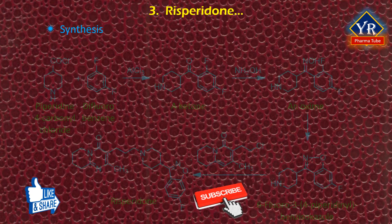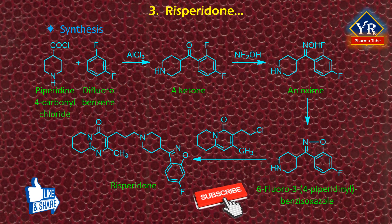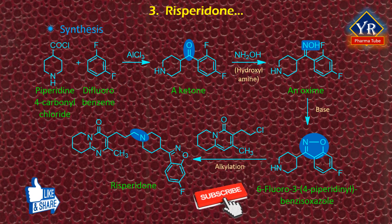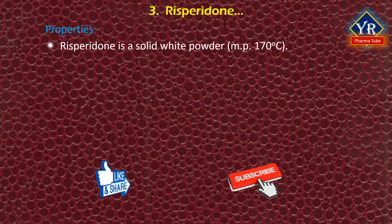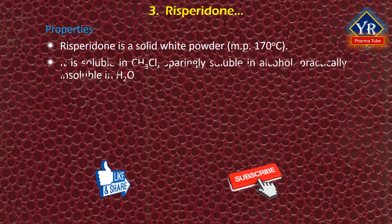Risperidone is synthesized by Friedel-Crafts acylation of difluorobenzene with piperidine-4-carbonyl chloride to give a ketone compound. This ketone reacts with hydroxylamine to form an oxime, which cyclizes in the presence of a base to form 6-fluoro-3-(4-piperidyl)benzisoxazole. N-alkylation of the piperidine nitrogen yields risperidone. Risperidone is a solid white to slightly beige powder with a melting point of 170°C. It is soluble in methylene chloride, sparingly soluble in alcohol, and practically insoluble in water.